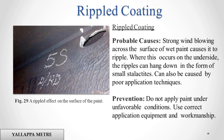Rippled Coating. Probable causes: strong wind blowing across the surface of wet paint causes it to ripple. Where this occurs on the underside, the ripples can hang down in the form of small stalactites. Can also be caused by poor application techniques. Prevention: do not apply paint under unfavorable conditions. Use correct application equipment and workmanship.